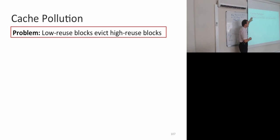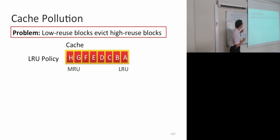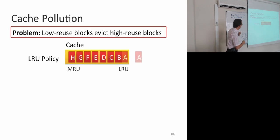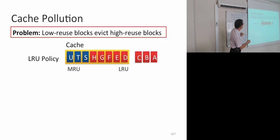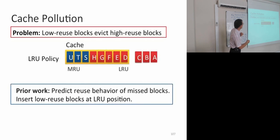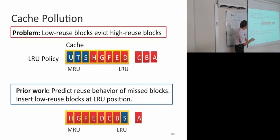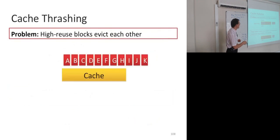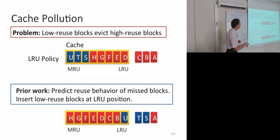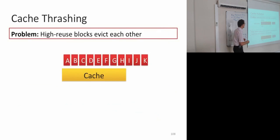Cache pollution refers to the problem that low reuse blocks evict high reuse blocks. If you use LRU policy, the blue blocks that are low reuse evict these high reuse red blocks. Prior work has taken the approach of predicting the reuse behavior of missed blocks and inserting low reuse blocks at the LRU position. If you figure out that blocks are low reuse, you insert them at LRU position, so these low reuse blocks disturb the high reuse blocks less. We're going to use that idea.